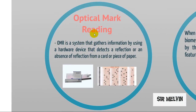Optical mark reading, or OMR, is a system that gathers information by using a hardware device that detects a reflection or absence of reflection from a card or piece of paper. An example is the Lotto reader — the card is scanned by the OMR device.